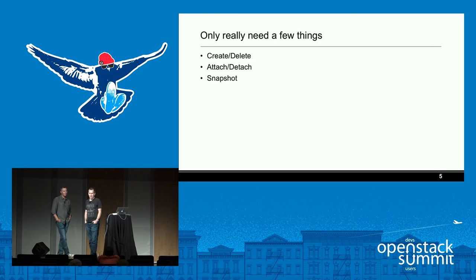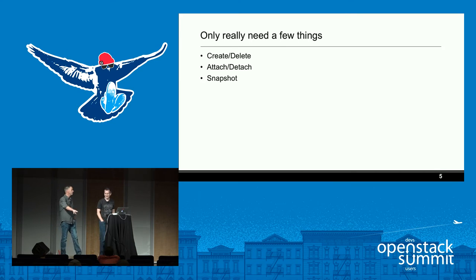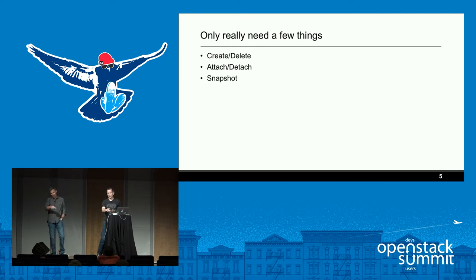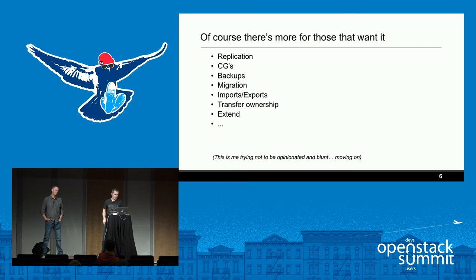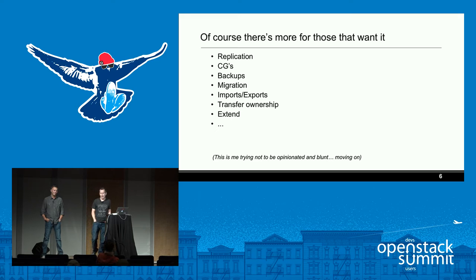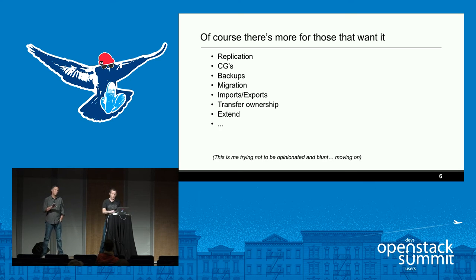Docker introduced the Docker volume API with commands like create, delete, attach, detach, list — and snapshot. Those are the things you need in a cloud. Docker supports the first four plus list; the snapshot functionality is not in the basic Docker API. We'll talk about how we can make that happen. There are also additional storage features like replication, consistency groups, backup, and migration.